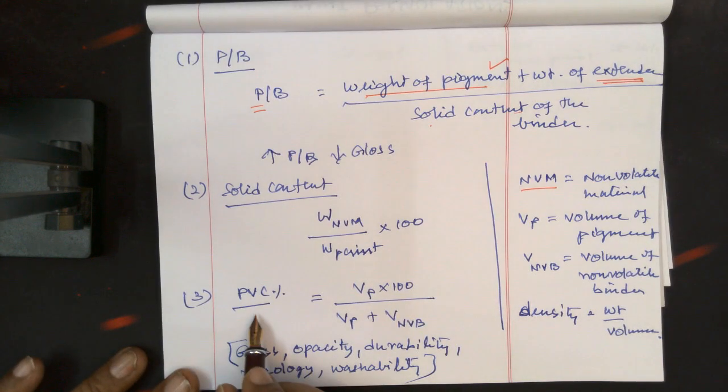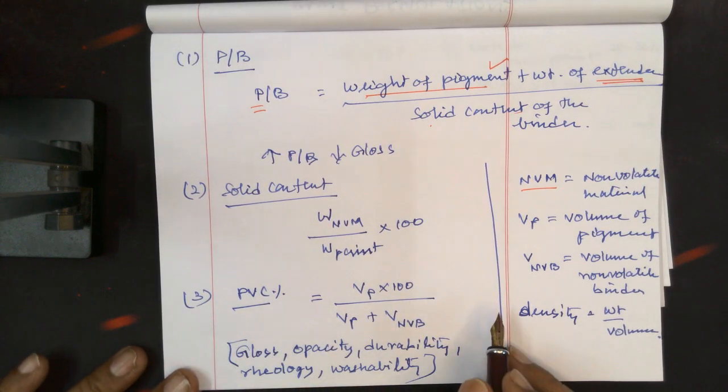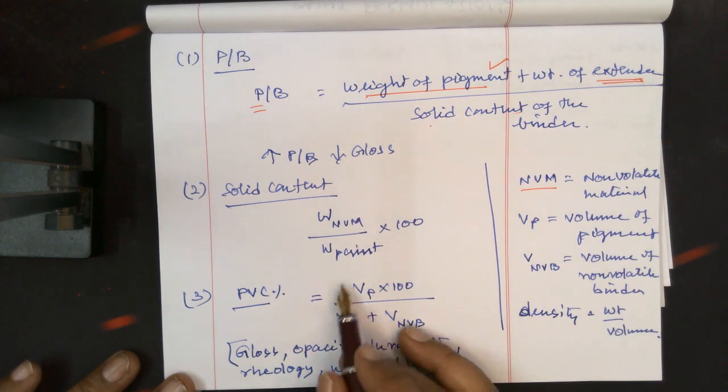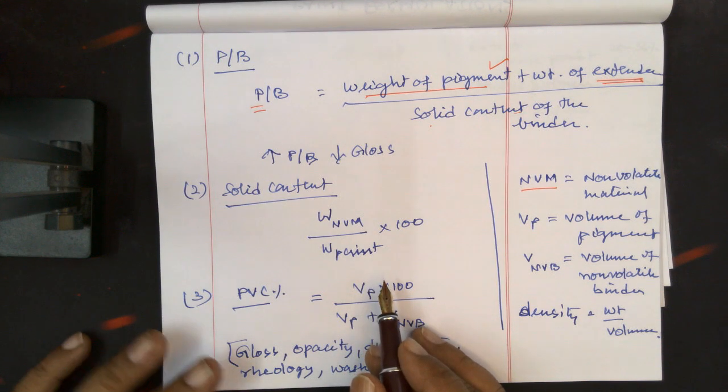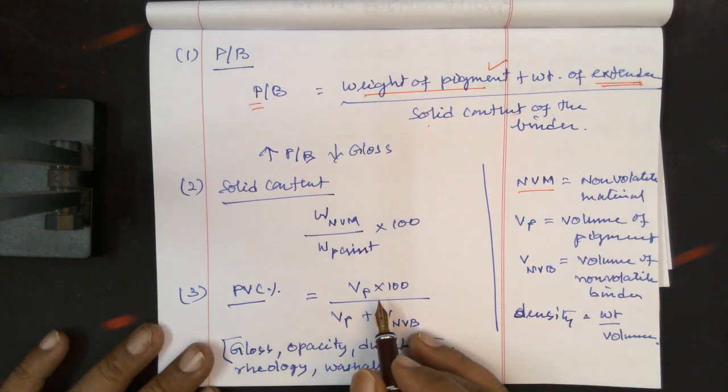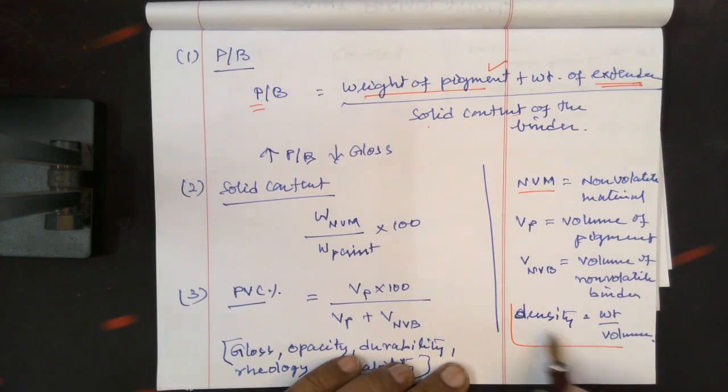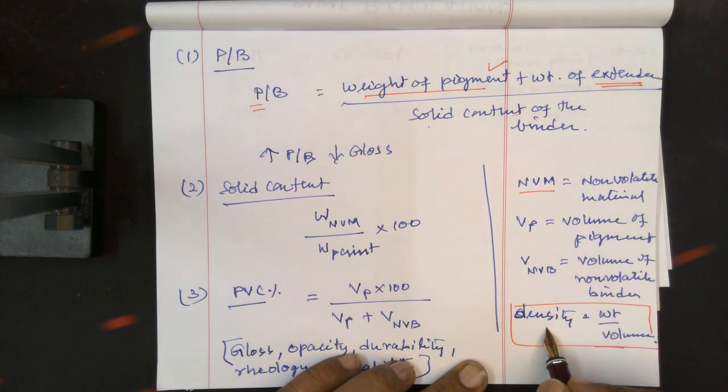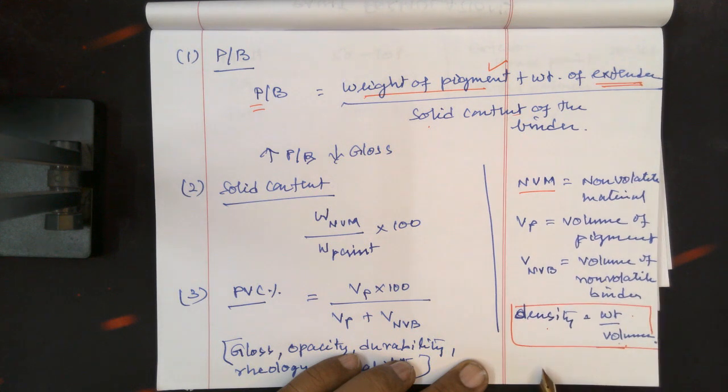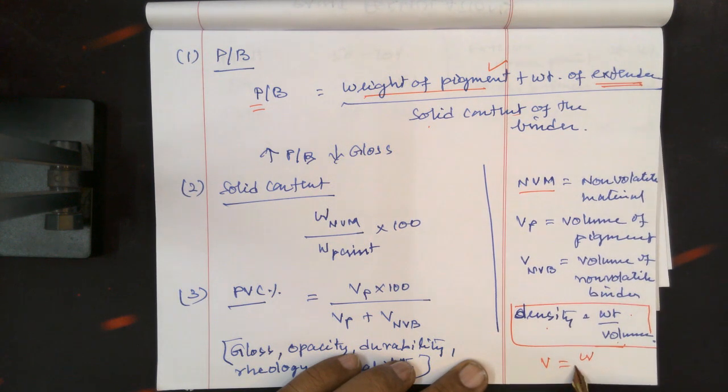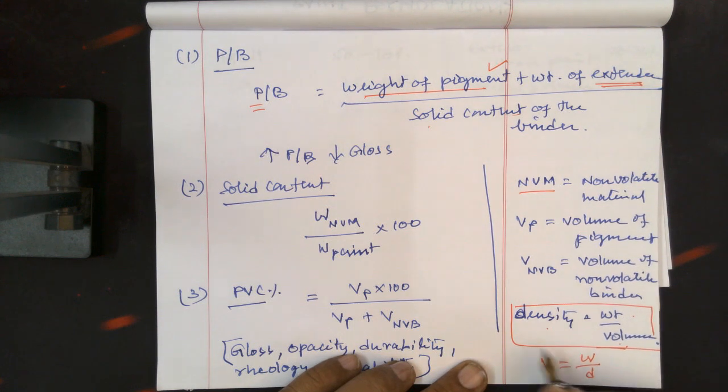Third, the pigment volume concentration, about which we already discussed. This is nothing but the volume of the pigment. How can you get the volume of the pigment? After all, it is pigment in solid form. We can work this out - for example, we know the density. Density equals weight by volume. If you know the density of the pigment and the weight, we can calculate the volume. Therefore, volume equals weight divided by density.